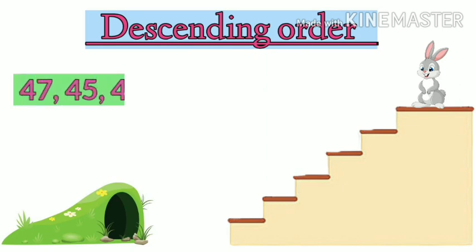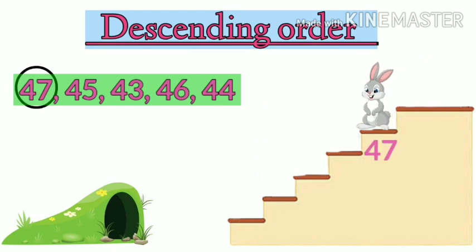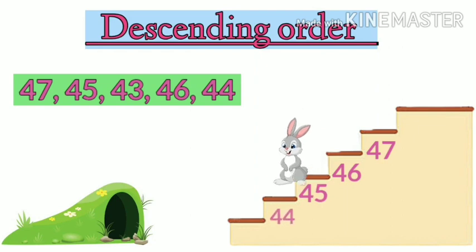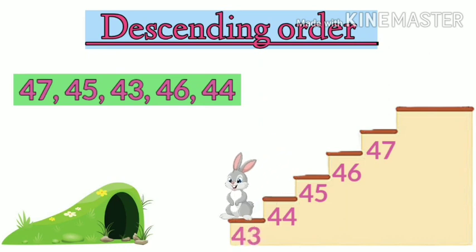47, 45, 43, 46 and 44. So let the rabbit jump. What will be the first number? Children, you think first. Yes, 47, then 46, 45, 44 and the last number is 43.